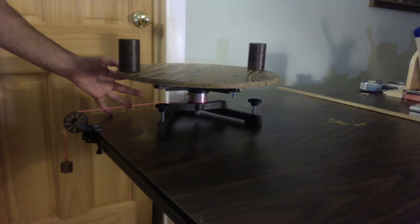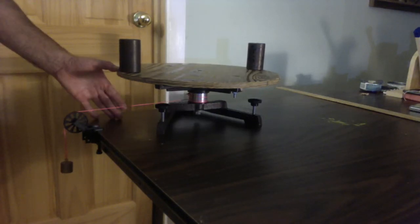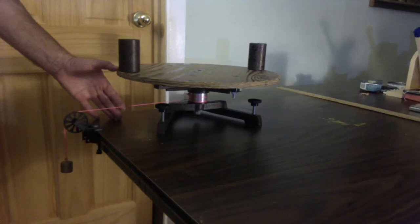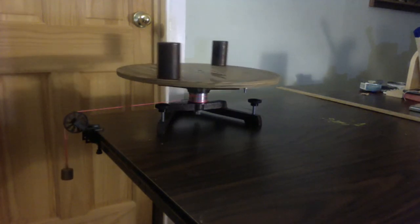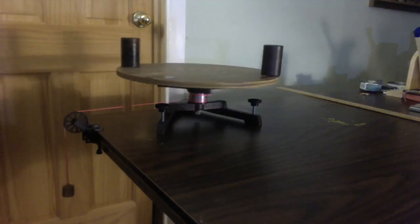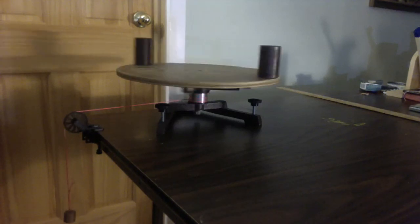Well, to do this experimentally, you're going to have to time this now. In order to find the rotational inertia of these masses experimentally, we have to time the turntable. We'll do one rotation. Ready, set, go. Stop.